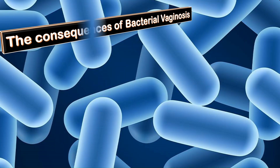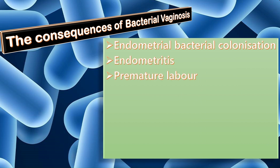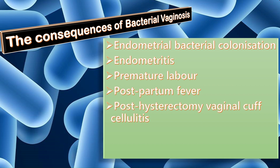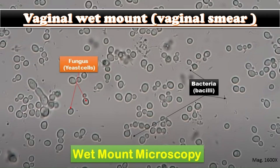The consequences of bacterial vaginosis include endometrial bacterial colonization, endometritis, premature labor, postpartum fever, post-hysterectomy vaginal cuff cellulitis, and post-abortal infection. Bacterial vaginosis is also a risk factor for HIV transmission and other sexually transmitted diseases.